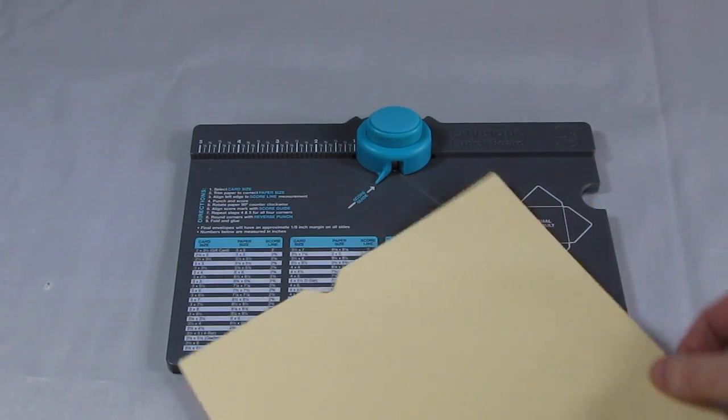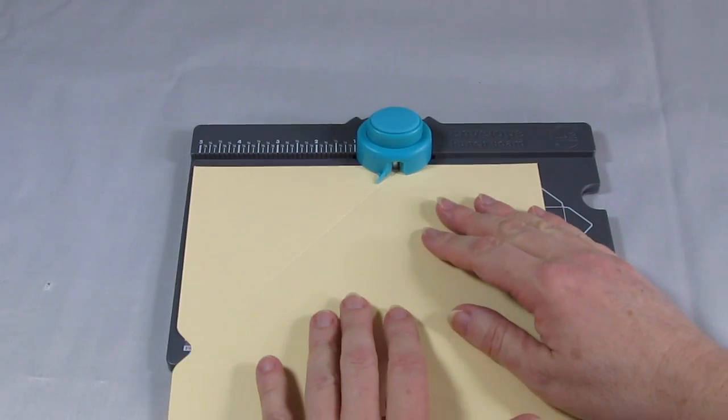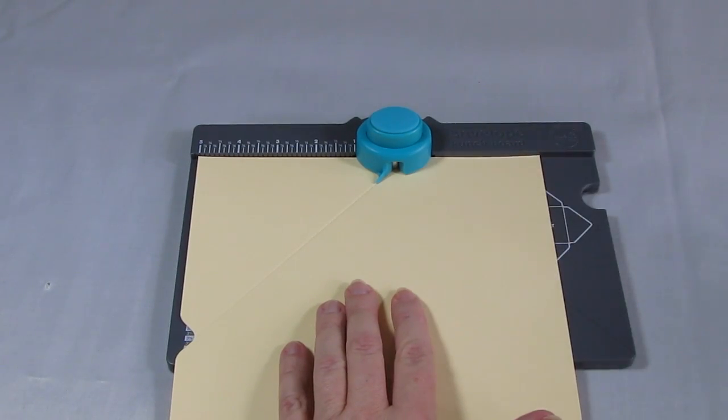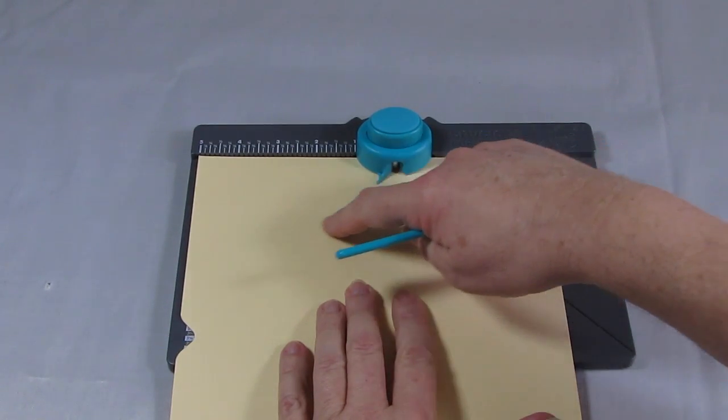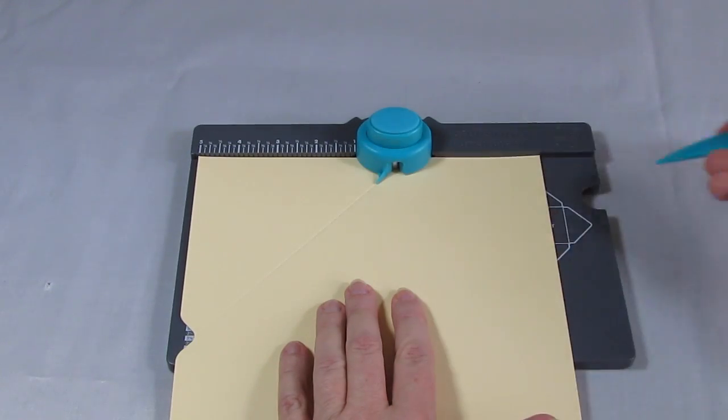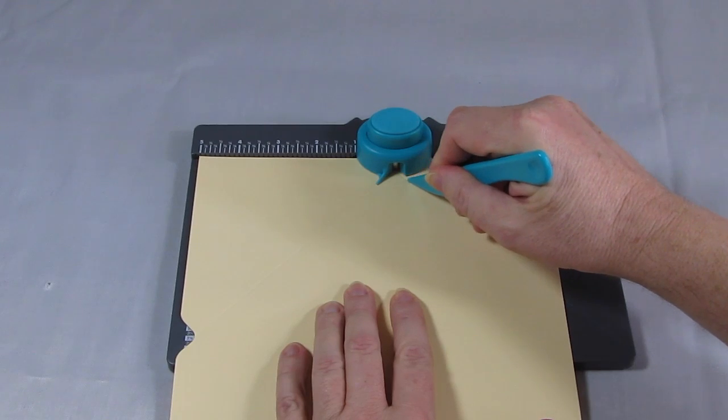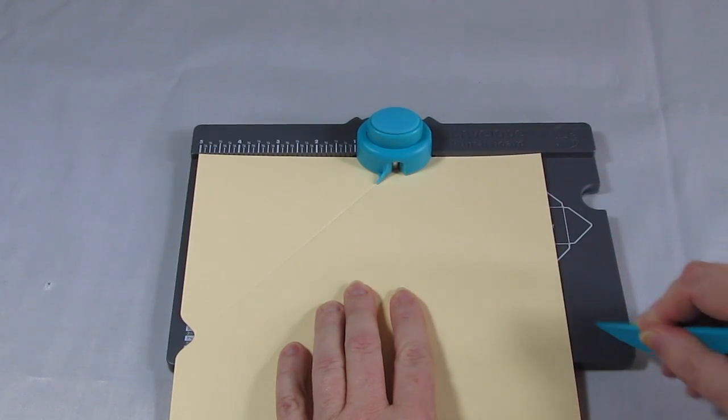Now once you've done that just rotate it 90 degrees. Now you don't have to line it up with any figures anymore, you're just going to line the crease you've made with this little pointer here and then just carry on and do a score and do a punch. We won't make you watch it all, let's speed the process up a little bit.